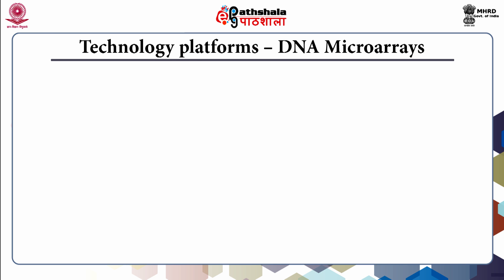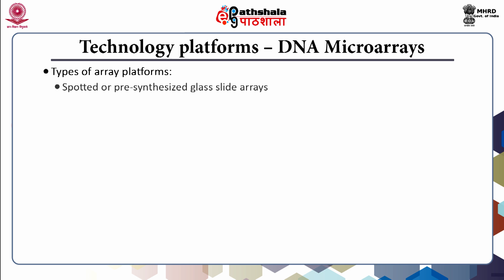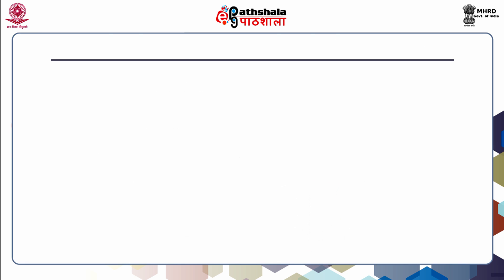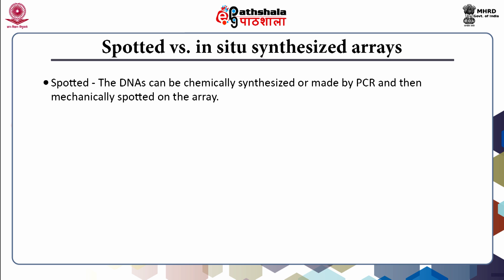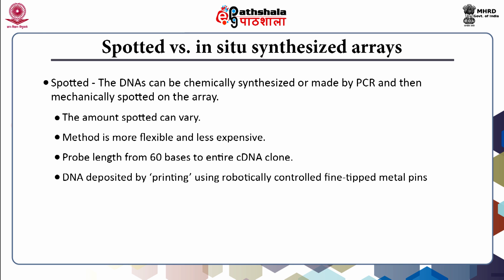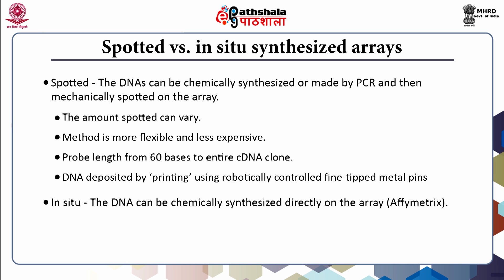There are two methods in the technology platform: spotted or pre-synthesized glass slide arrays and in-situ oligonucleotide arrays. Different types of small molecules, peptides, proteins, or DNA can be labeled onto the chips. The common probes used are cDNA or oligonucleotides. Spotted DNA arrays are chemically synthesized or made by PCR and then mechanically spotted on the array. The method is more flexible and less expensive, with probe length from 60 base pairs to entire cDNA clones. DNA is deposited by printing using robotically controlled fine-tipped pins.